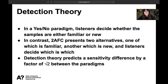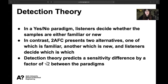Regarding detection theory, we conducted two listening tests using both a yes-no and a two-alternative forced choice test. In the yes-no paradigm, participants decide whether samples are familiar or new — the most important feature being that the subject is presented with one item per trial. In contrast, in the two-AFC test, participants are presented with two alternatives, one always familiar and one always new, and must decide which is which.